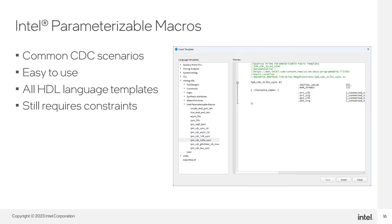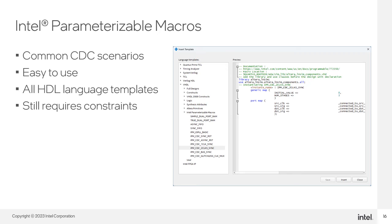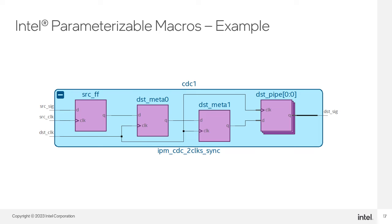Starting in Intel Quartus Prime Pro software version 23.3, you can instantiate a variety of macros including macros that support clock domain crossing circuitry. The CDC macros cover synchronizing resets into a new clock domain and synchronizing data as a single bit or bus into another clock domain. There is even a glitchless clock switching macro. Templates for Verilog and SystemVerilog are the same, and there are VHDL example macros as well. These macros do not come with SDC constraints, so you run your design to the place stage, create a timing netlist through Timing Analyzer, and use the node finder to help locate areas of the macro for the necessary CDC timing constraints.